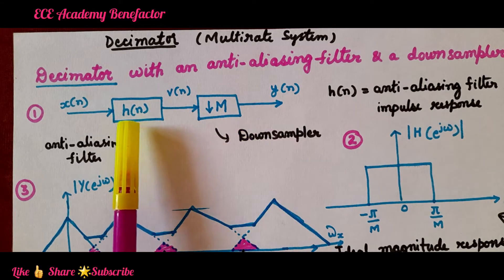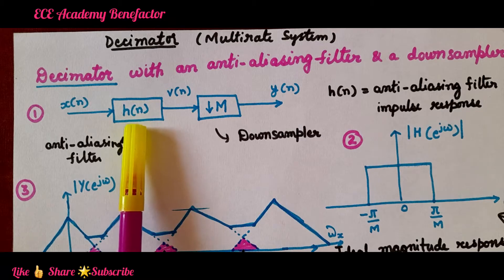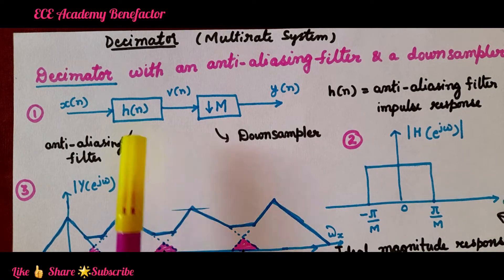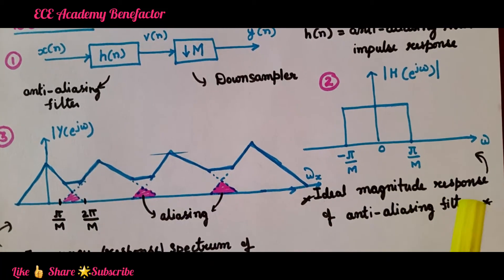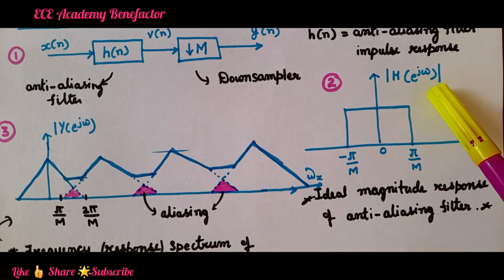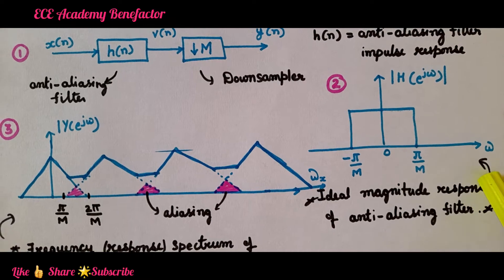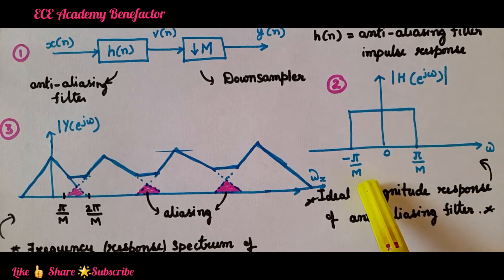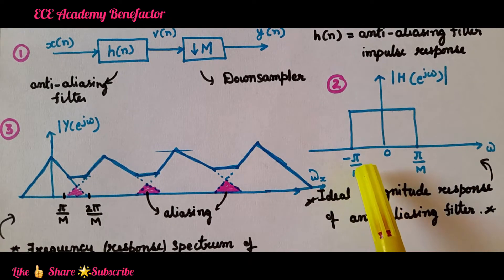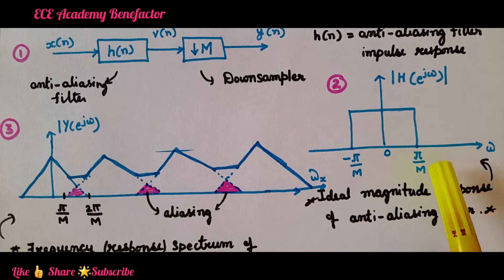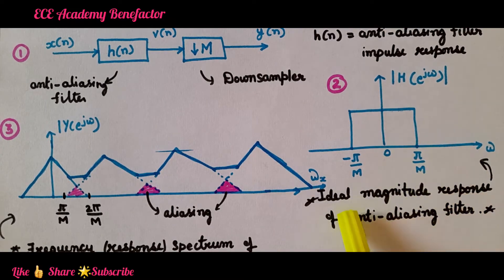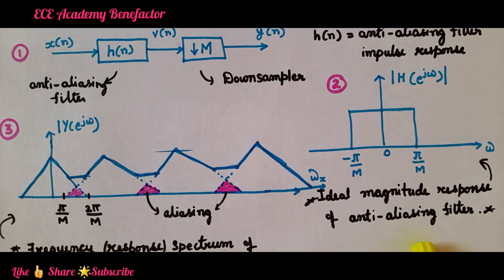If you see the ideal magnitude response of the anti-aliasing filter, it is of this nature — mod of H of e to the j omega versus omega. It is band limited to minus pi by M to plus pi by M. This is the ideal magnitude response of the anti-aliasing filter.